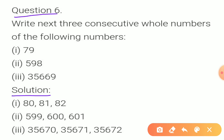Question 6: Write the next 3 consecutive whole numbers of the following numbers — that is, the next 3 numbers continuing after each. After 79: 80, 81, 82. After 598: 599, 600, 601. And after 35,669 the numbers will be 35,670, 35,671, and 35,672.